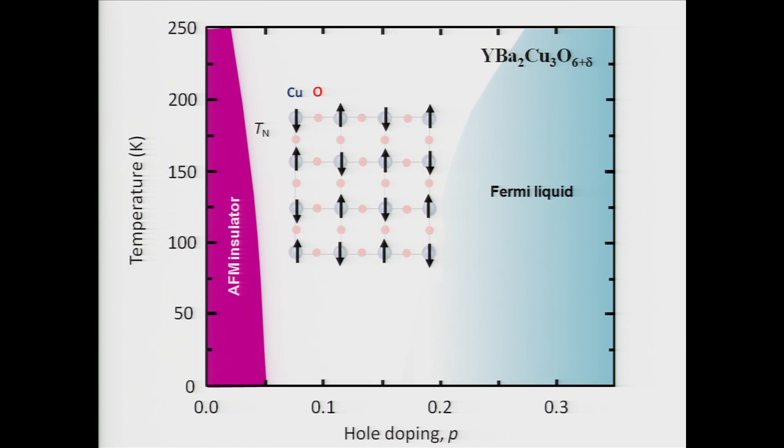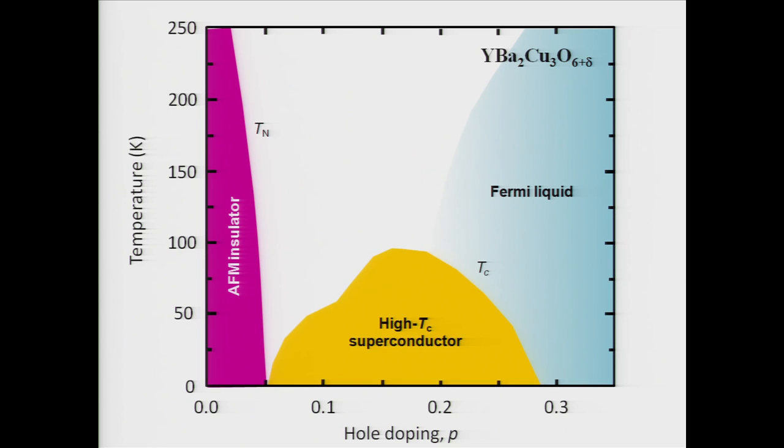So what else happens in this phase diagram? Well, it turns out that in the intermediate doping range when I'm right between the AFM insulator and the Fermi liquid, I encounter a phase called a high-temperature superconductor, or high-Tc superconductor for short. The properties of this superconductor are remarkable. First of all, if you measured the electrical resistance of this compound, you would find that below some critical temperature, which I call Tc, the electrical resistivity or the electrical resistance drops to zero. Exactly zero. Not close to zero, but exactly zero. So it conducts the electricity absolutely efficiently.